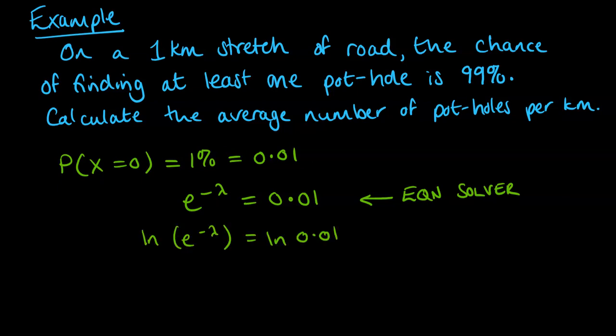Solving it algebraically looks like this. To undo e we do natural log of both sides, so we get negative lambda equals the natural log of 0.01. Lambda, popping that into our calculator, is 4.61 potholes per kilometer.